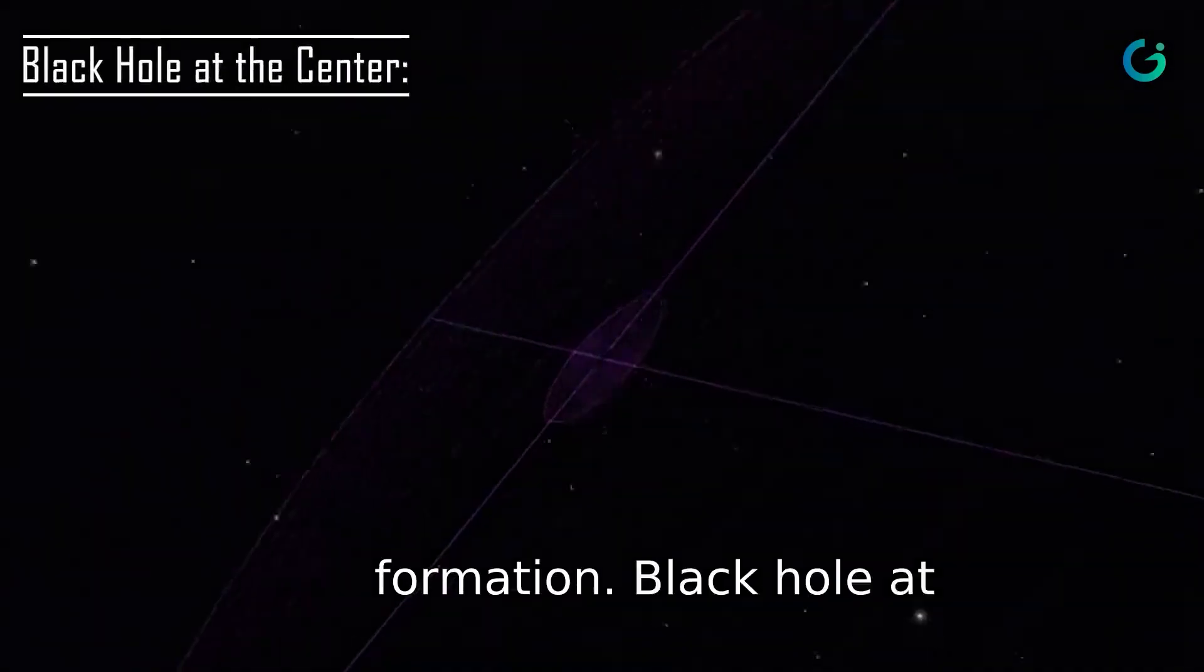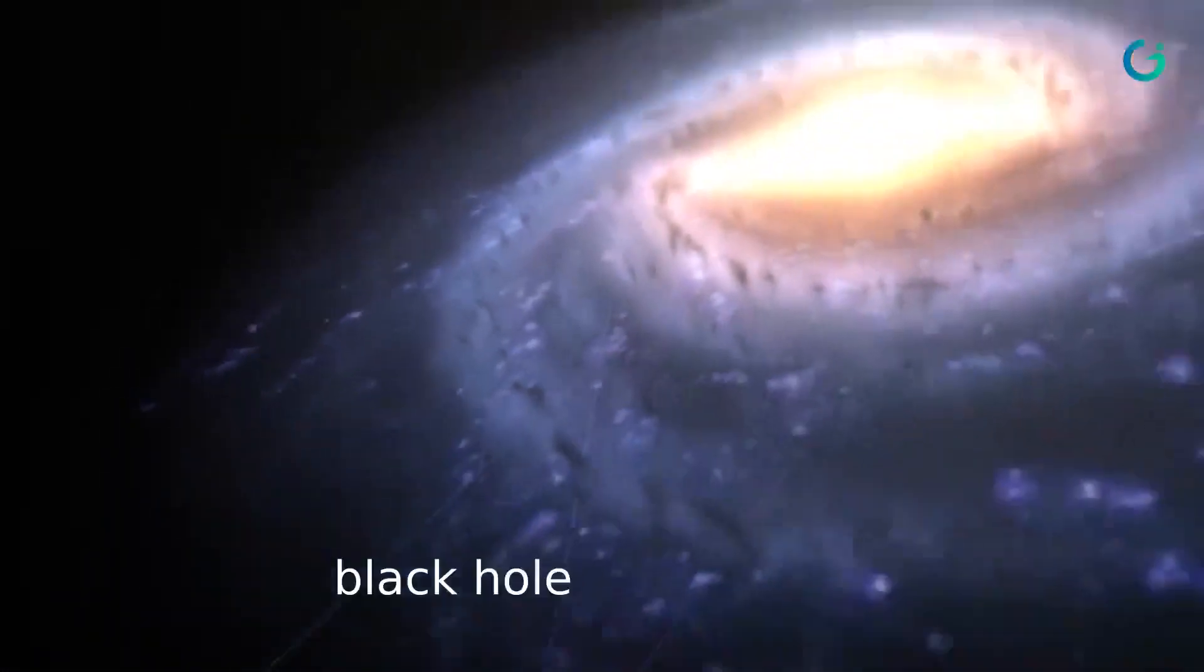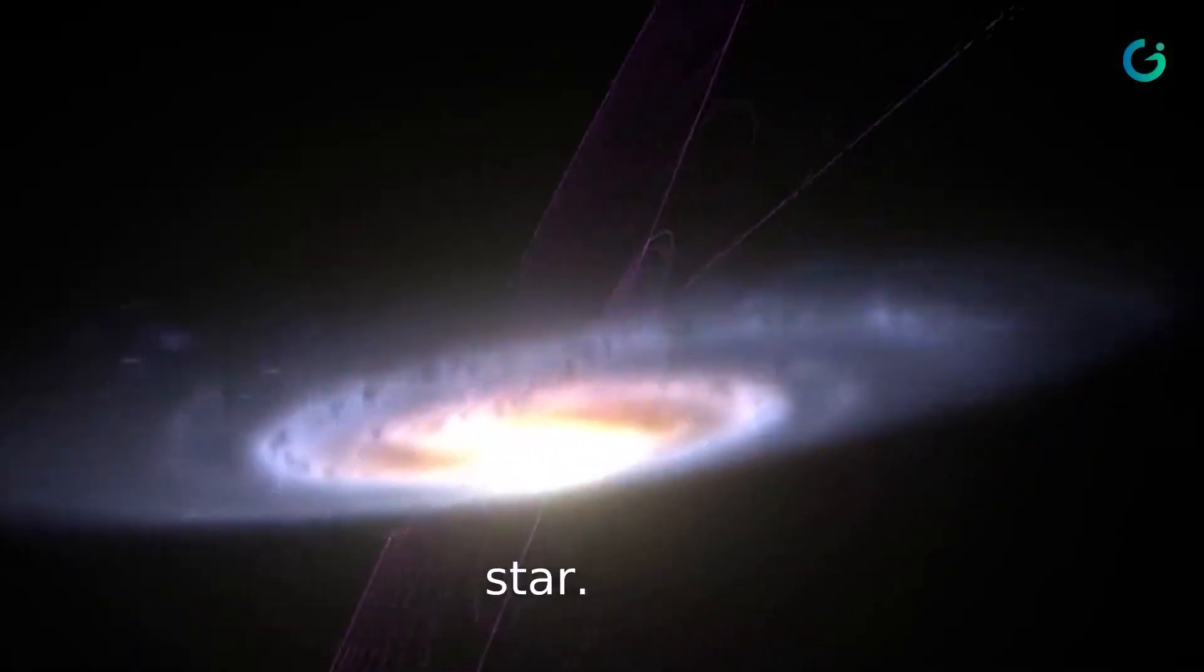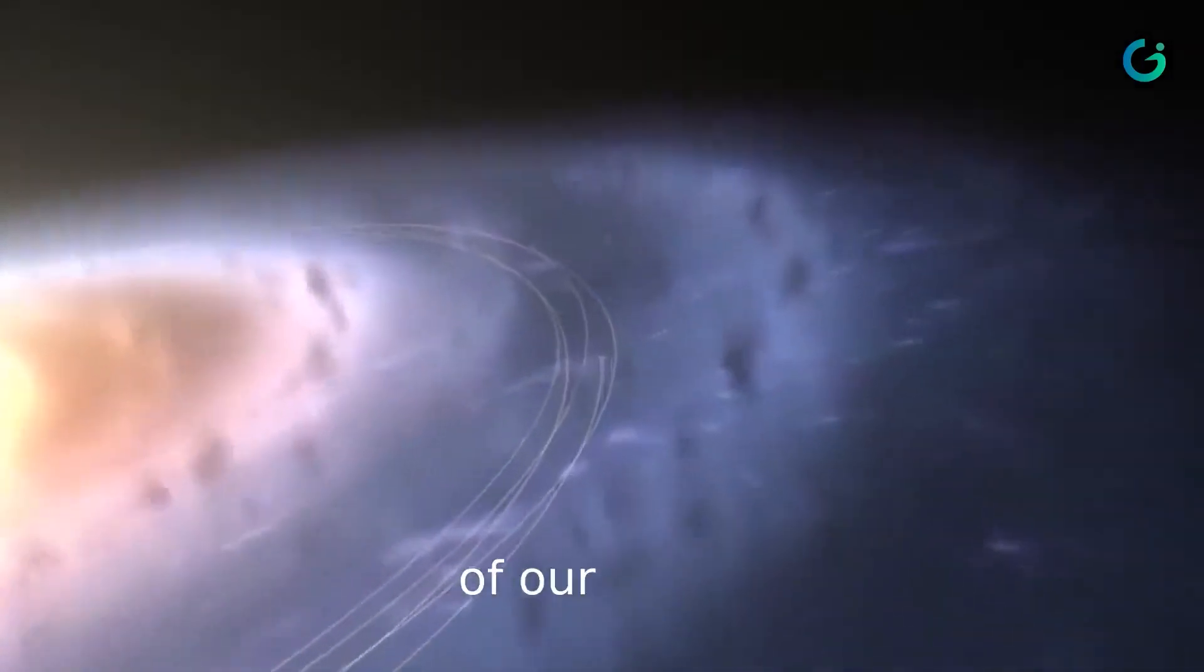At the heart of the Milky Way lies a supermassive black hole called Sagittarius A, pronounced Sagittarius A-star. It has a mass equivalent to about 4 million times that of our Sun.